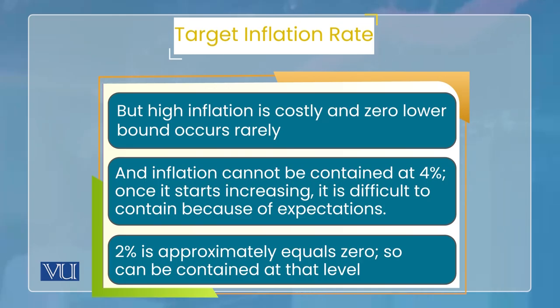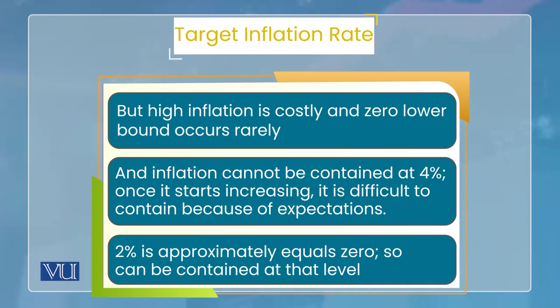दूसरा issue ये है कि 2% को almost zero consider किया जाता है — 0%, 1%, 2% लगभग zero माना जा सकता है. लेकिन 4% इतना low inflation नहीं है, ये थोड़ा higher side पे है. तो अगर 4% को central banks target कर रहे होंगे, तो इसकी probability बड़ी high है कि लोग higher inflationary expectations बना लें — अगर inflation 5% हो जाए तो लोग 5, 6, 7% की expectations बना लें, inflation ऊपर बढ़ना शुरू हो जाए, और central bank 4% पे भी control नहीं कर पाए. इसलिए शायद 2% पे maintain करना ठीक है.